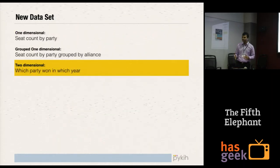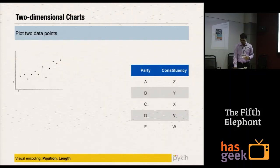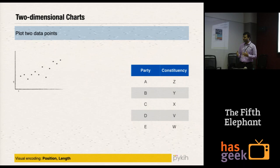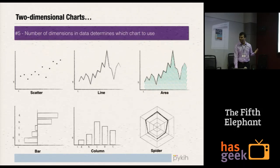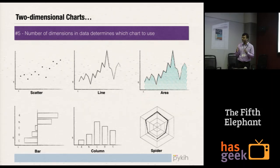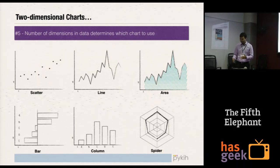Which party won in which year? This is a two-dimensional dataset — you have parties and years. Plot the dots and you have a two-dimensional dataset. Connect these lines and now you have a line chart. All of these charts represent exactly the same dataset. You should start by looking at the number of dimensions in your dataset — that will tell you which chart to use, whether to go to pie charts or to these charts.